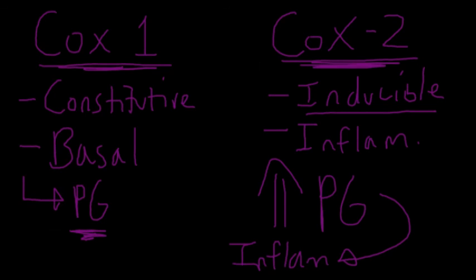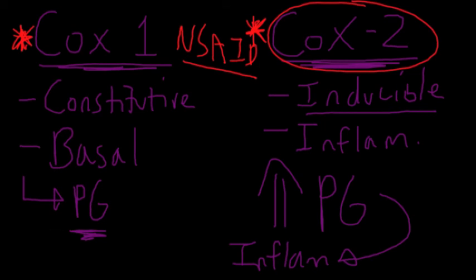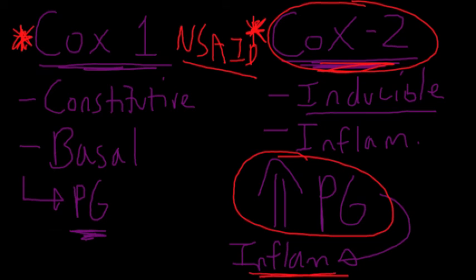So both of these enzymes are actually inhibited competitively by our non-steroidal anti-inflammatory drugs. So when a non-steroidal anti-inflammatory drug is in the picture, we have reduction during inflammation, we have reduction of the COX2 enzyme, which lowers prostaglandin in times of massive inflammation.